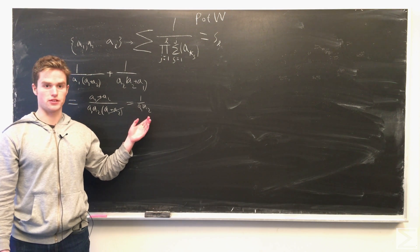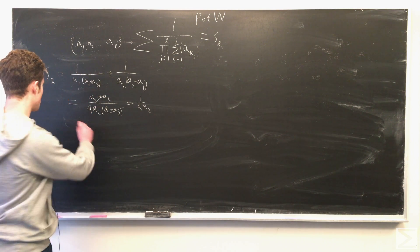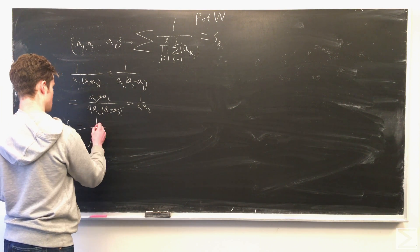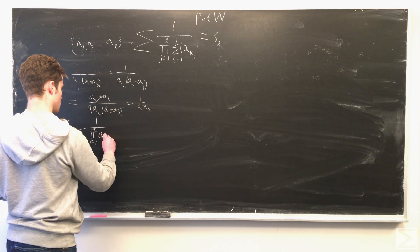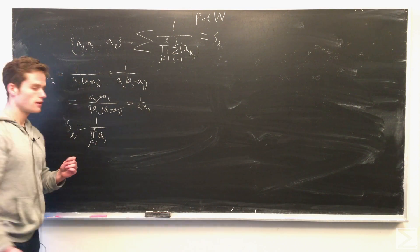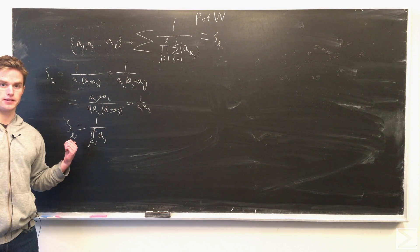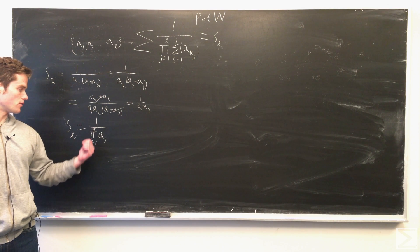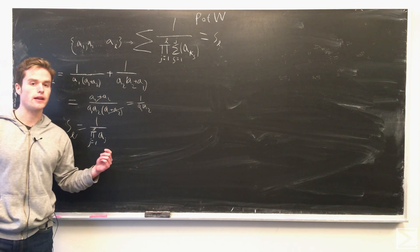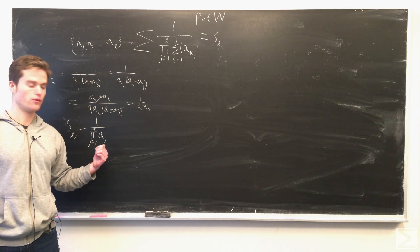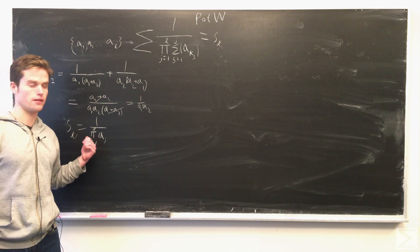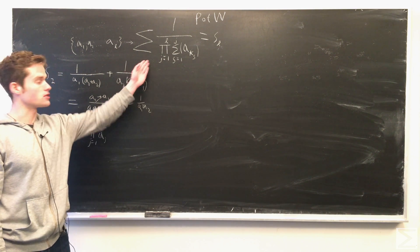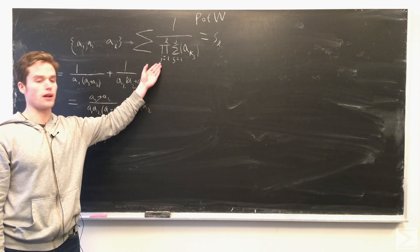So this might suggest a general rule that the sum S_L is just 1 over the product from 1 to L of A_j. Now let's assume this is true for L equals N, and then let's try to find this sum for N plus 1.